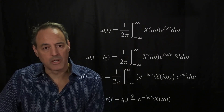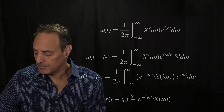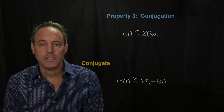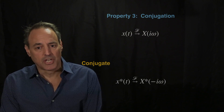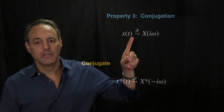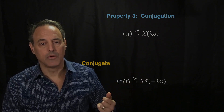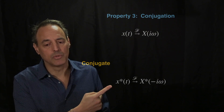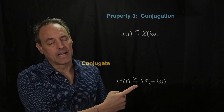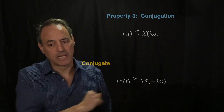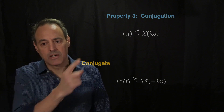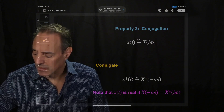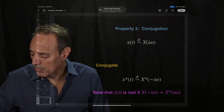Simple manipulation of the integrals is what allows us to write down most of these properties. Property number three is conjugation. We take our signal x(t) and conjugate it — replacing every i with minus i. Taking the Fourier transform of the conjugated signal gives x-star evaluated at minus i omega. This makes sense because the i gets turned into minus i omega.